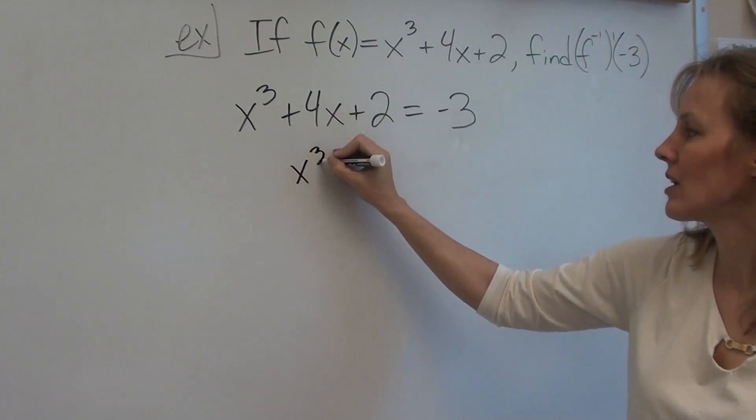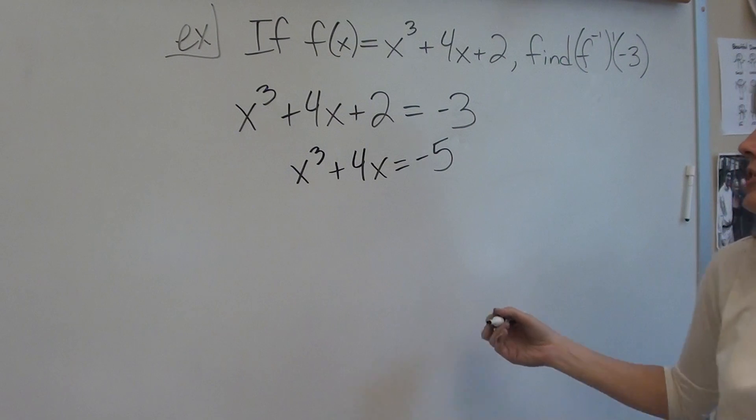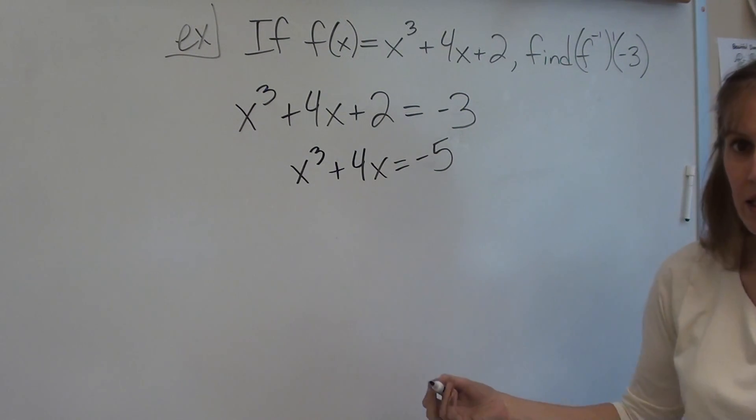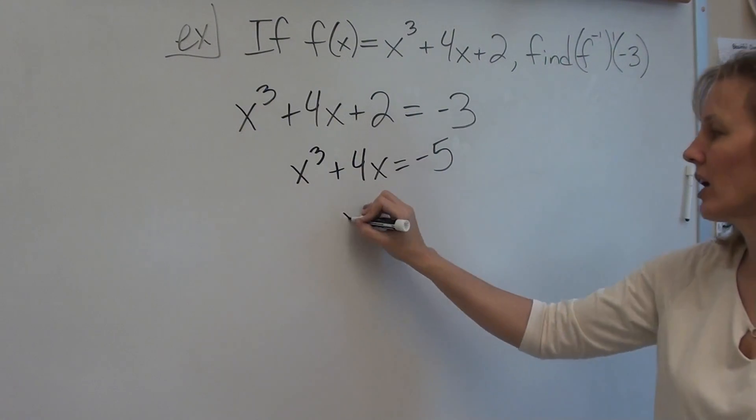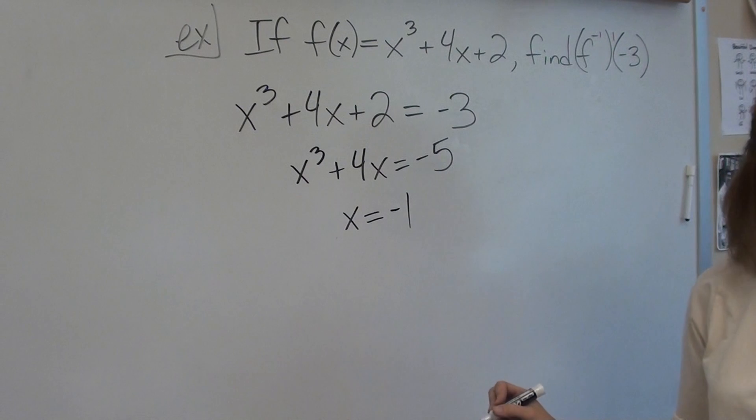Now, I like to get all of the numbers on one side, and then just use guess and check. I don't know how to solve a cubic quickly and easily, so I'd rather just use guess and check. And for me, just kind of thinking about it for a moment, I figure out that x is negative 1.